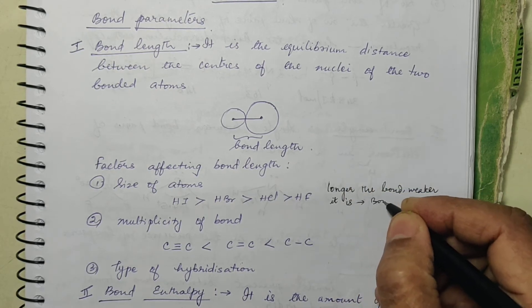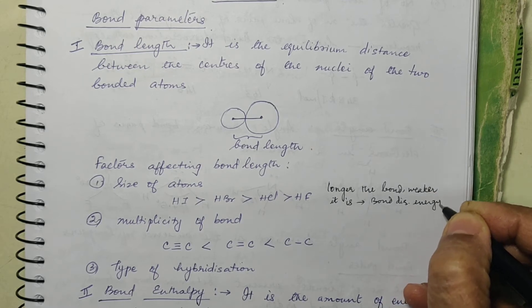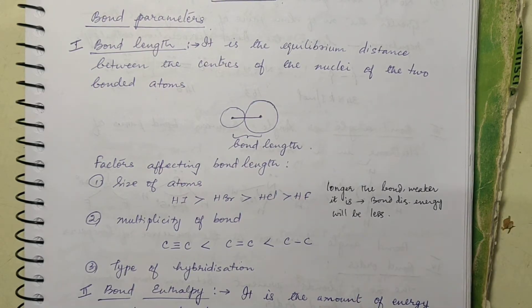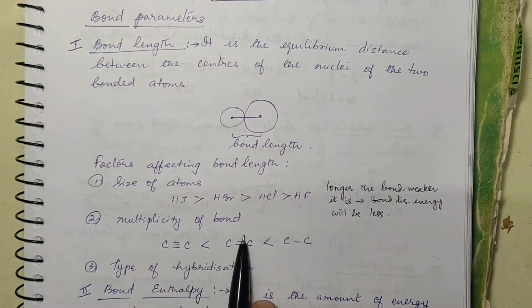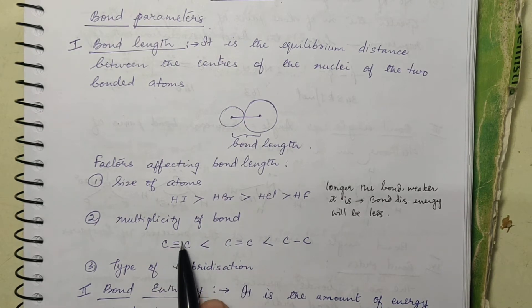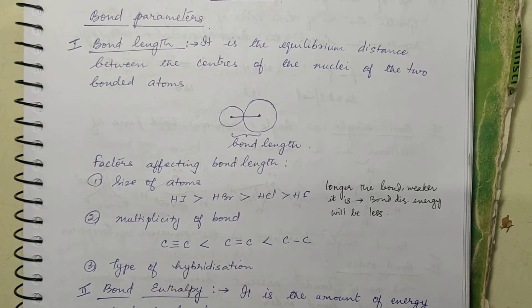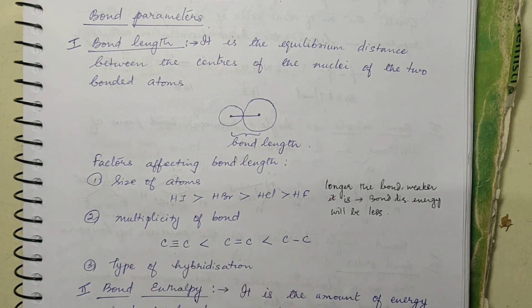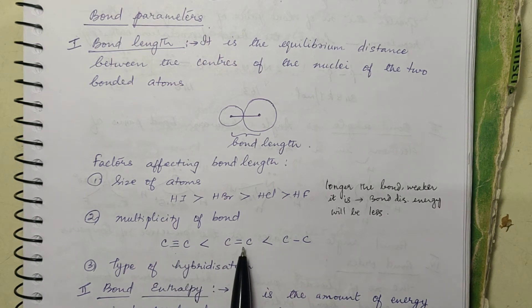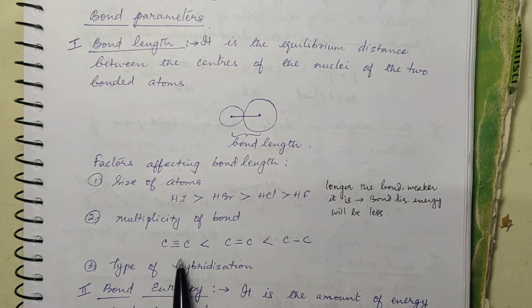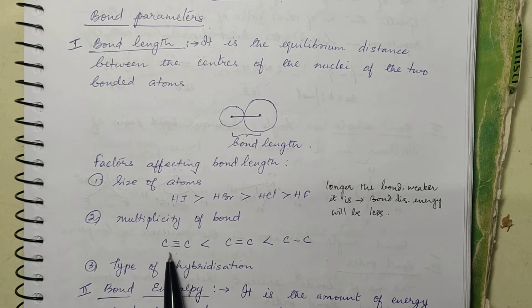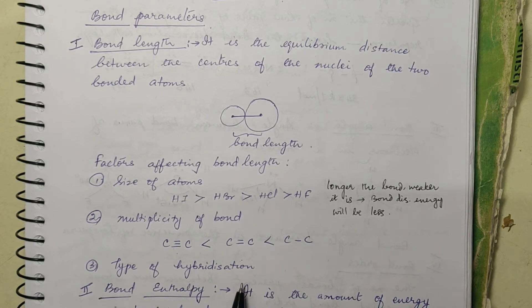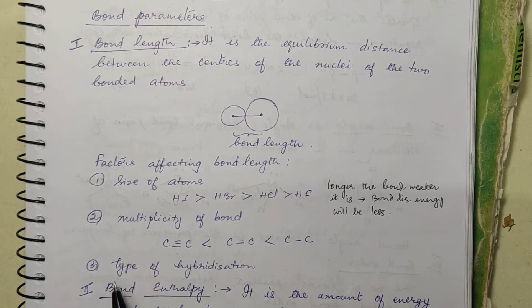Bond dissociation energy will be less — you need to supply less energy to break that bond. Then, multiplicity of bond: here there are three bonds, two bonds, one bond. Greater the number of bonds between any two atoms, shorter the bond length and stronger it is. Where there is a triple bond, the bond length is the shortest; where there is a single bond, the bond length is the longest. Type of hybridization also makes a lot of difference, which we will see a little later.